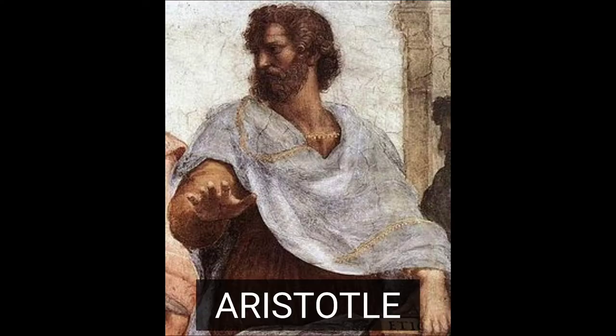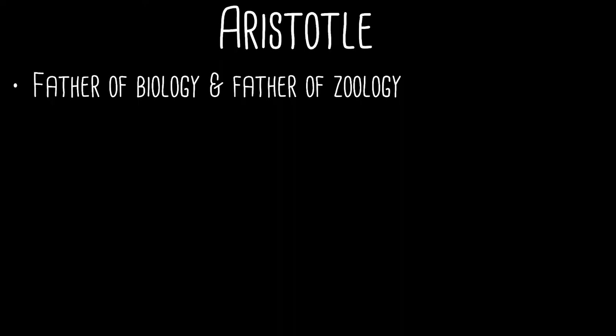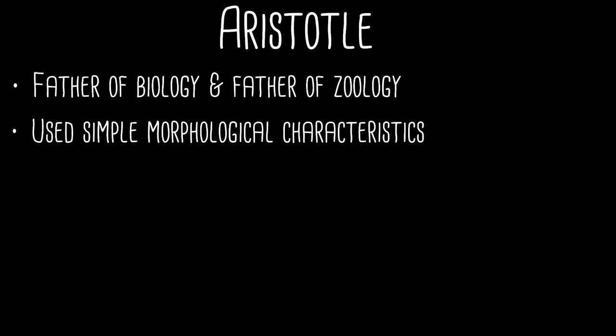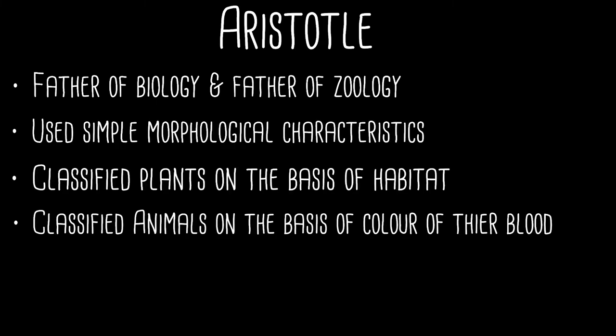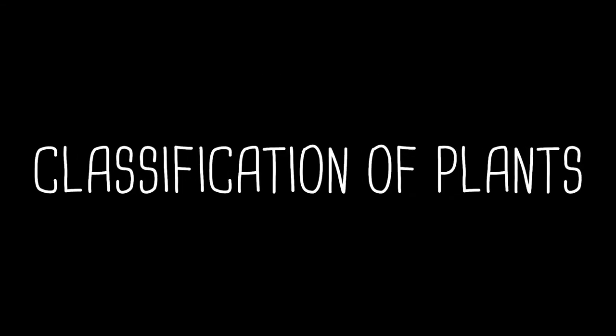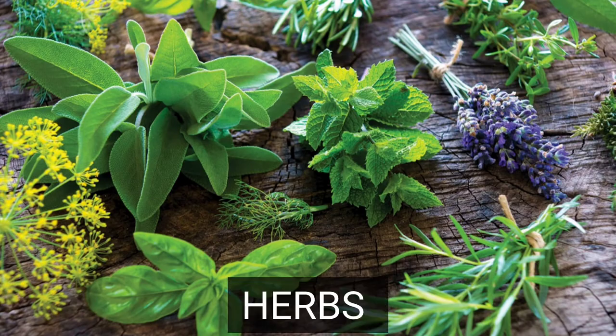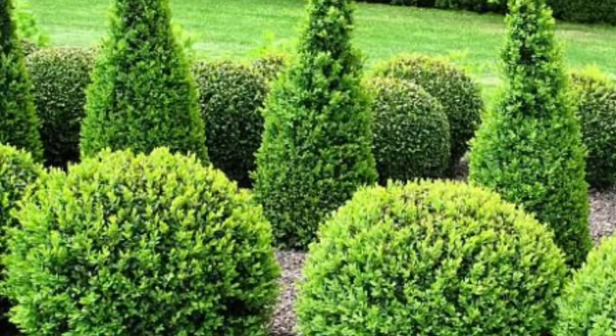The initial classification was given by Aristotle around 350 BC. He is also known as the father of biology and father of zoology. He classified all known living organisms into two groups: plants and animals. He used simple morphological characters to classify them, and classified plants on the basis of their habitat into herbs, shrubs, and trees.